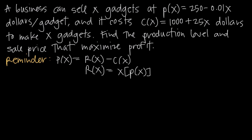In this video, we're going to be doing an applied optimization problem. We've been told that a business can sell x gadgets at P(x) = 250 minus 0.01x dollars per gadget — that function models the price of each gadget. We also know it costs the company C(x) = 1,000 plus 25x dollars to make x gadgets. We've been asked to find the production level and the sale price that maximize profit.